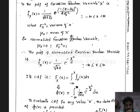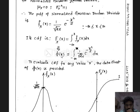Substituting the mean value of 0 and variance of 1, the normalized Gaussian random variable PDF becomes f_x(x) equal to 1 divided by the square root of 2π, multiplied by the exponential of minus x squared divided by 2, where x is between minus infinity and plus infinity.